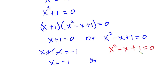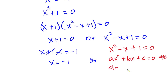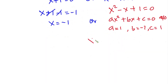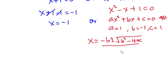For the other factor, x squared minus x plus 1 equals zero. Comparing to the general quadratic ax squared plus bx plus c equals zero, we have a equals 1, b equals negative 1, c equals 1. Applying the quadratic formula x equals negative b plus or minus square root of b squared minus 4ac, all over 2a, we get x equals 1 plus or minus square root of 3i, all over 2.